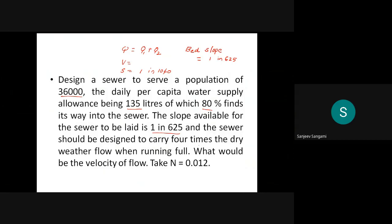The sewer should be designed to carry four times the dry weather flow. Dry weather flow occurs only during summer and winter seasons. In rainy seasons, four times the flow can be expected because of increased rainfall. If not given, assume two to three times; here it is given as four times the dry weather flow.